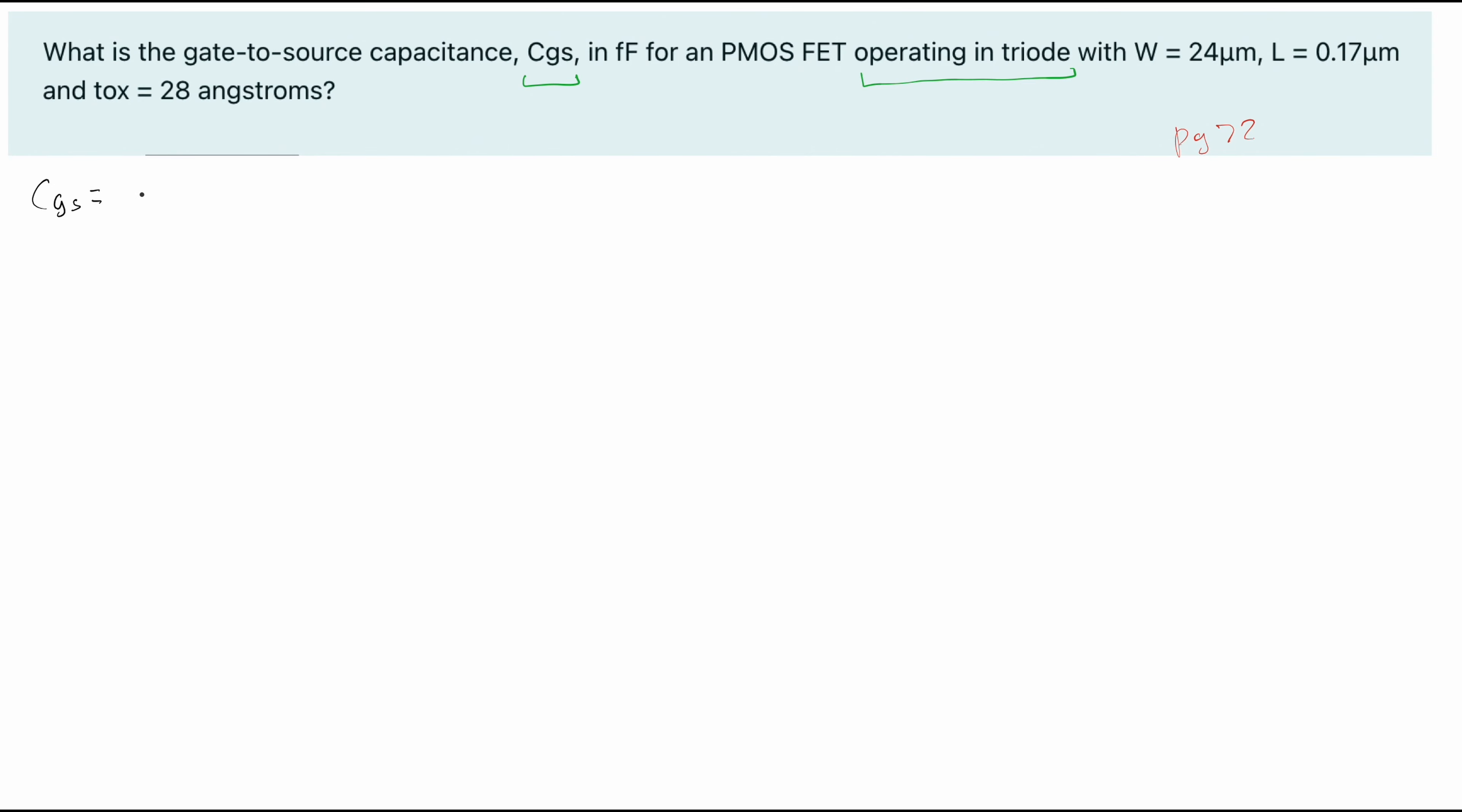CGS is going to be equal to our CGD, which is also equal to one half times our C gate, which is what we want. Now let's write a little bit more for our C gate. Very important you include the units here. For our C gate, we're going to get our COX times our WL.